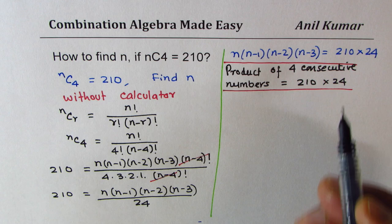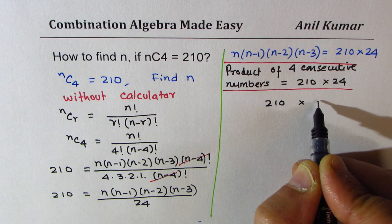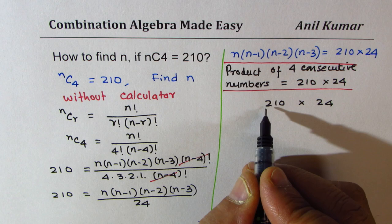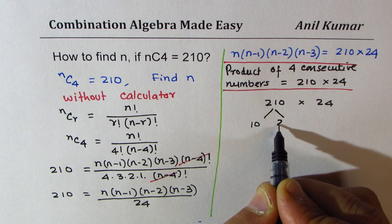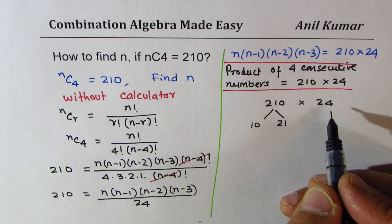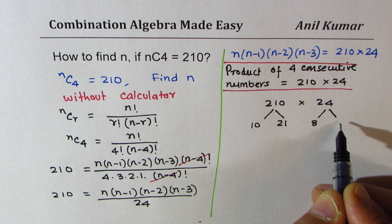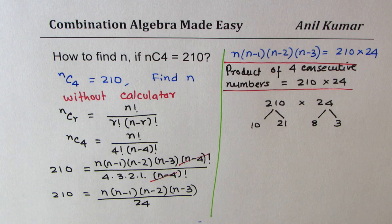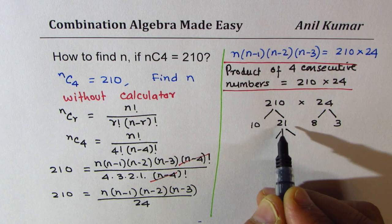Let me write factors for these. Now 210 could be written as 10 times 21. 24 could be written as 8 times 3. Now we could further divide 21 into its factors which are 7 and 3.